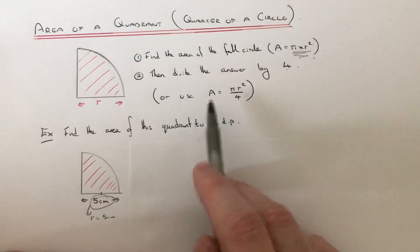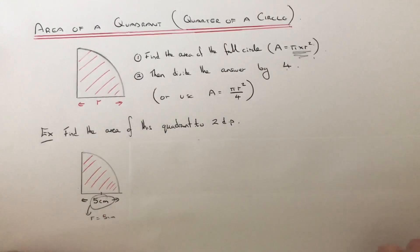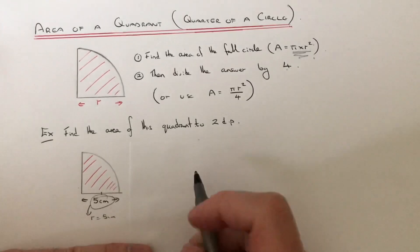Alternatively you can just put the radius directly into the formula pi r squared over 4. Okay, so let's have a look at an example then.